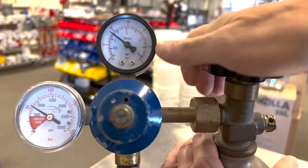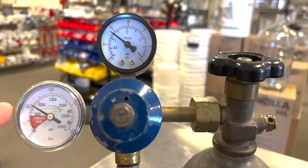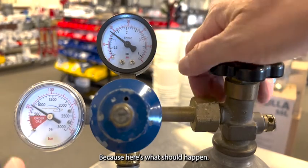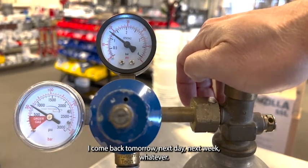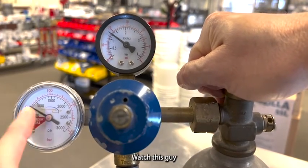See it move? If that gauge moves at all, you have a leak, regardless if it's just a jiggle. Because here's what should happen: I come back tomorrow, next day, next week, whatever. Turn on this gauge, watch this guy.